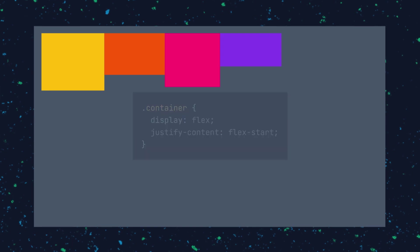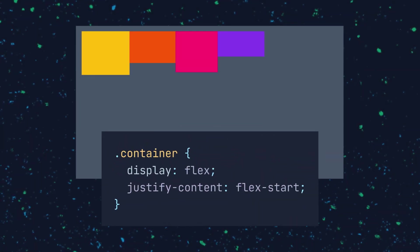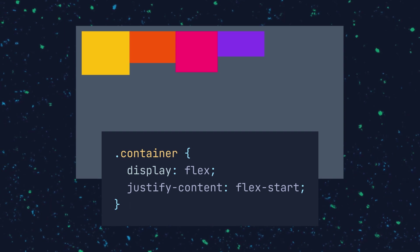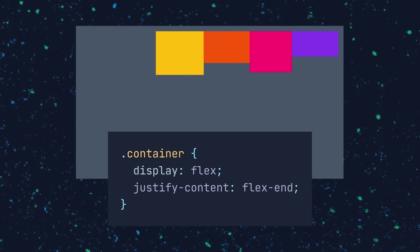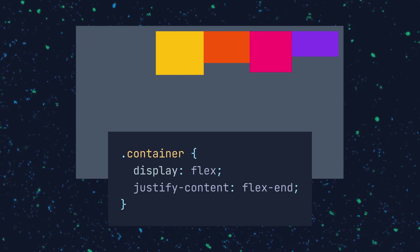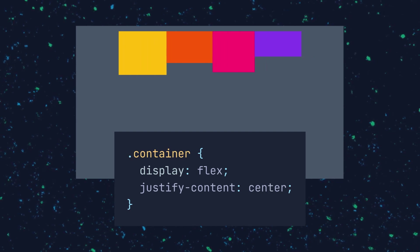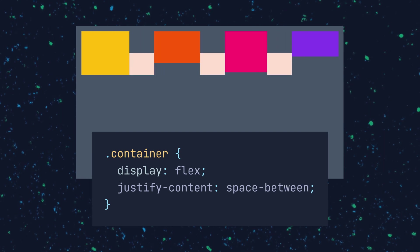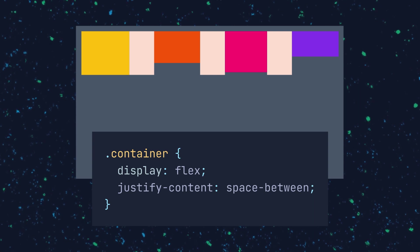If you want to change the alignment of the items on the main axis to help distribute the extra space left over in the parent container, you would use the CSS property justify-content. Right now, the flex items have justify-content set to the default value of flex-start, which aligns the items towards the start of the flex direction. The flex-end property aligns the items towards the end of the flex direction. The center property aligns the items towards the center. The space-between property evenly distributes the items, but places the first and last items at the start and end of the line.